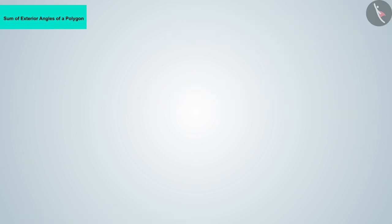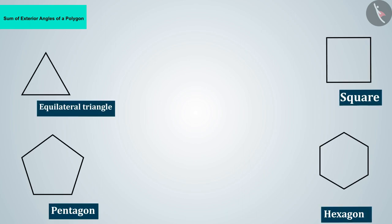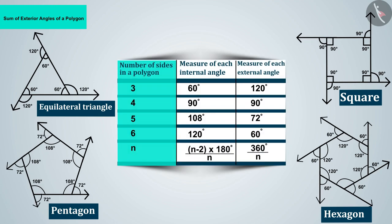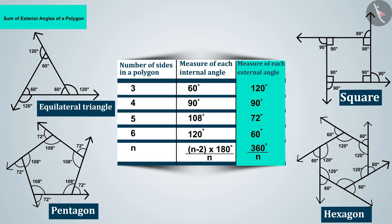Let us go ahead and consider an interesting fact related to the angles of polygons. Here we are shown some polygons, with measurements for each interior angle and exterior angle. We can see that as the number of sides in the polygon increases, the measurement of each internal angle increases but the measurement of each external angle decreases.